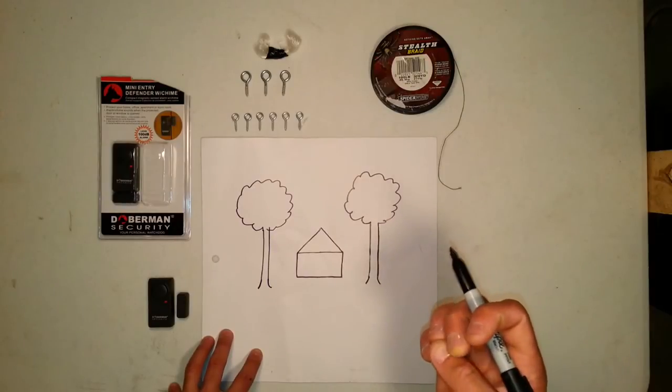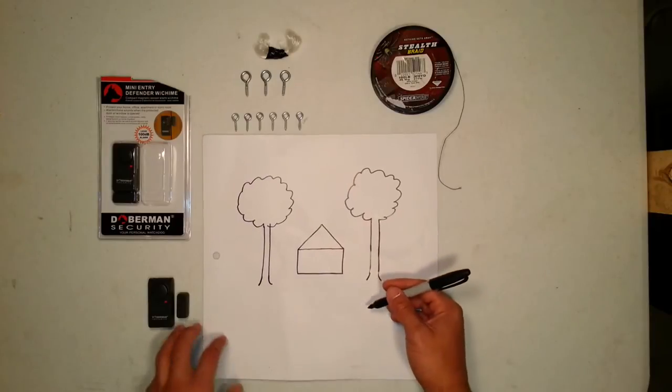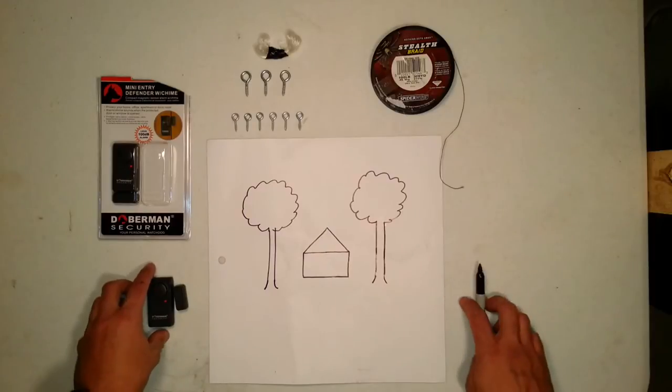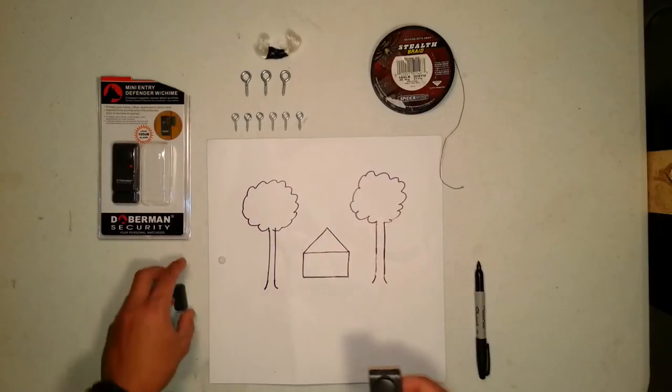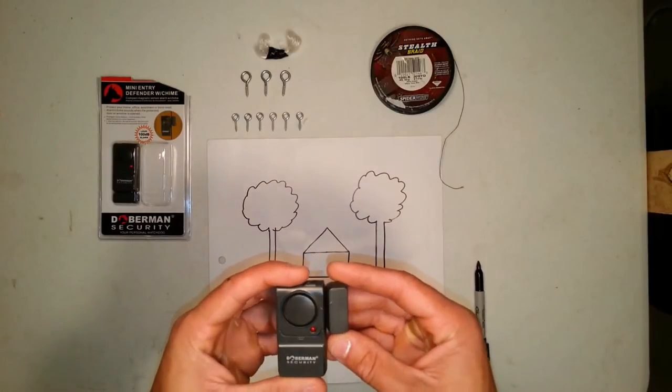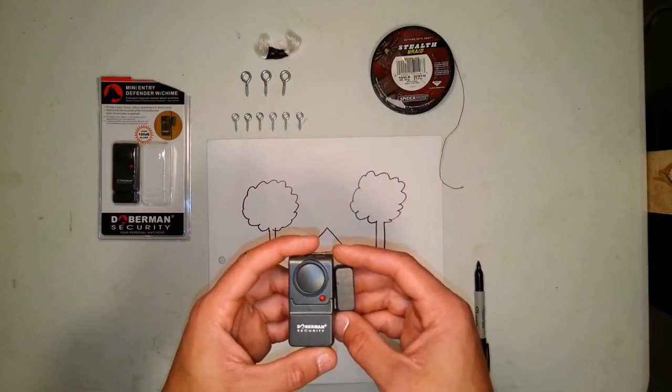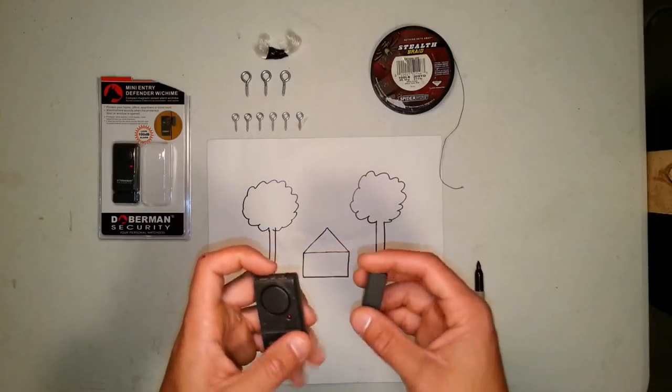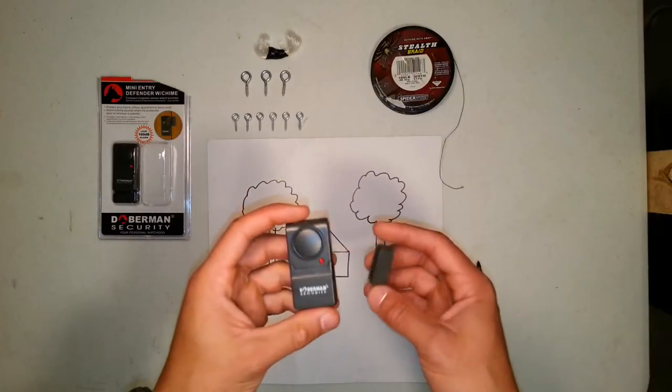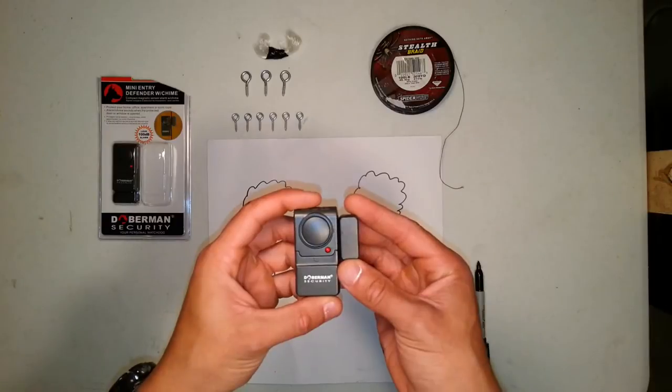What we're going to use for this, what I propose, is one of these little mini door alarm things. You can get these from Home Depot - I think I got these from Home Depot. It's pretty basic and they're only like five bucks, ten bucks for the two of them, which is pretty good. You heard that beep there, so it's activated.